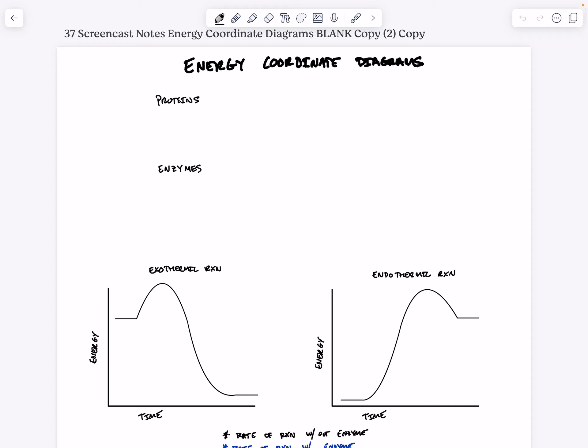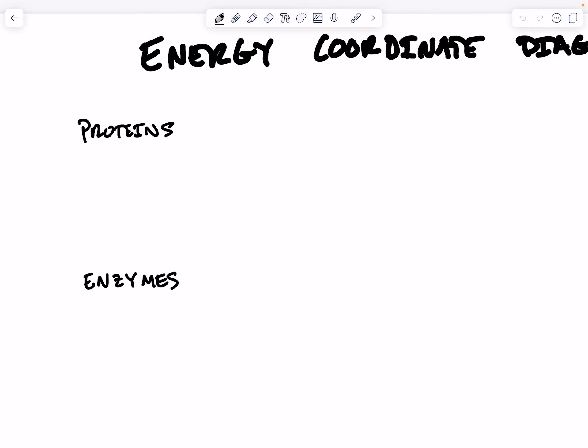Specifically, we're going to be looking at the rate of a reaction with and without an enzyme. Before we begin, we're going to talk about what is an enzyme. Most enzymes are made up of proteins, and you all know that the building blocks of proteins are amino acids.